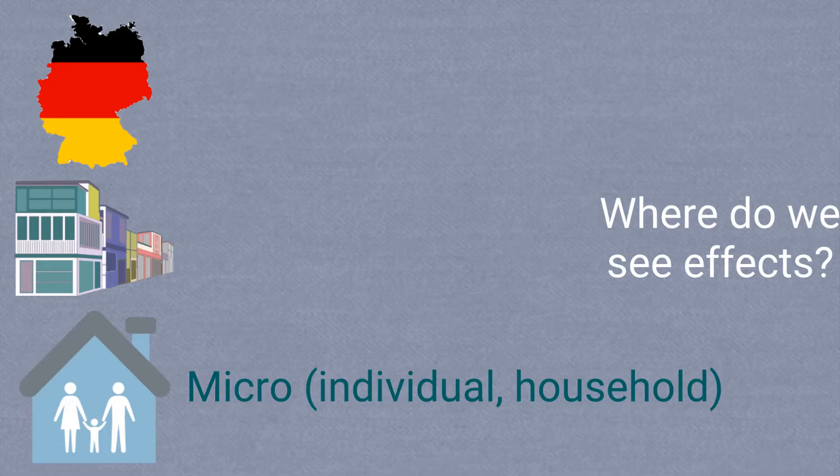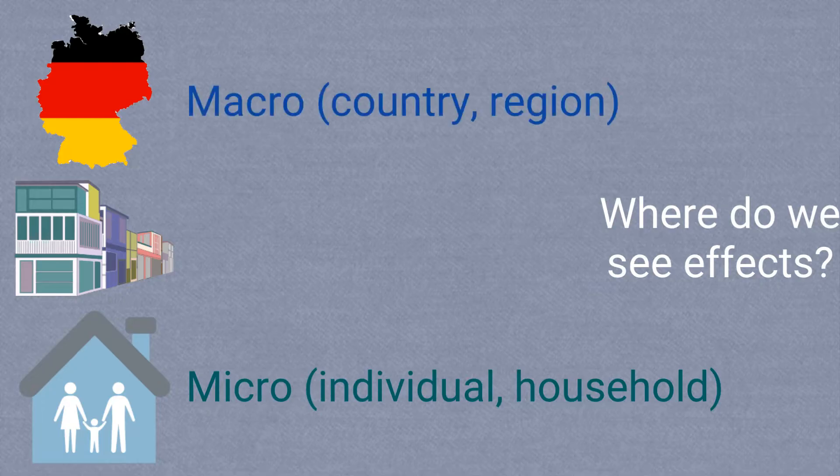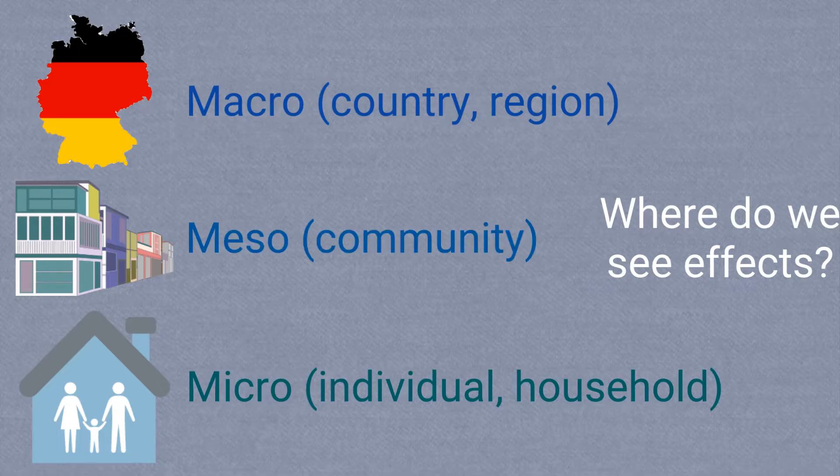On the other end of the spectrum, we'll talk about effects at the country or regional level, which are also referred to as macro-level effects. We can also see effects at the community level in areas where migrants come from.